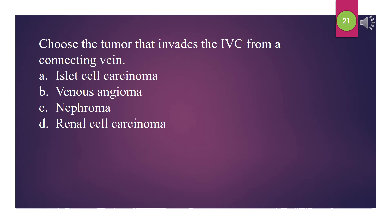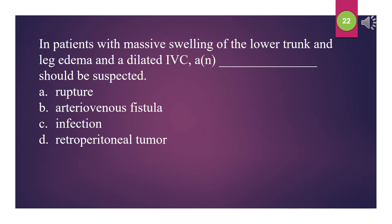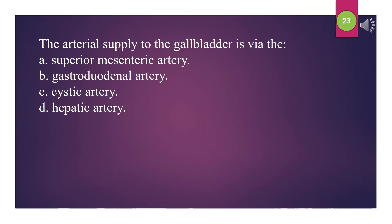Choose the tumor that invades the IVC from a connecting vein: A. Islet cell carcinoma. B. Venous angioma. C. Nephroma. D. Renal cell carcinoma. The answer is D: Renal cell carcinoma. In patients with massive swelling of the lower trunk and leg edema and a dilated IVC, what should be suspected? A. Rupture. B. Arteriovenous fistula. C. Infection. D. Retroperitoneal tumor. The answer is B: Arteriovenous fistula.